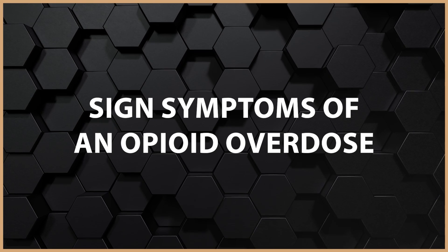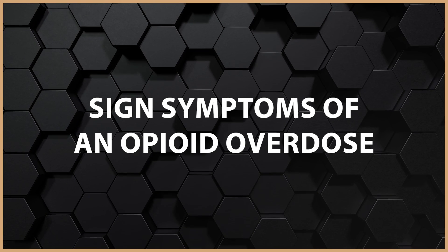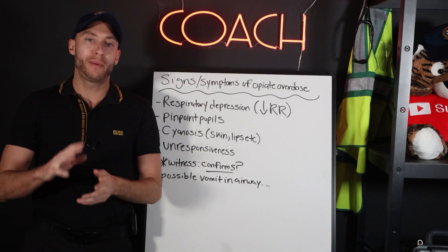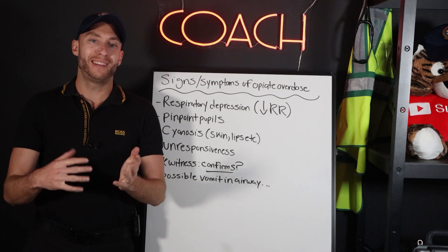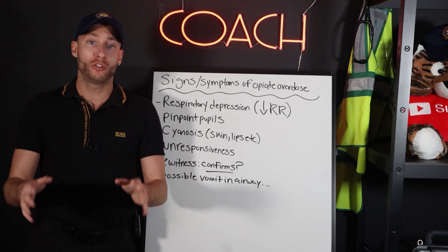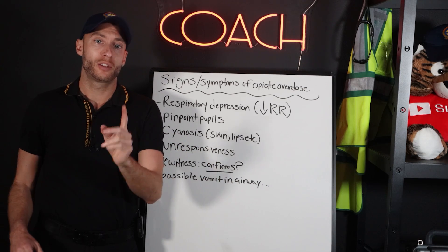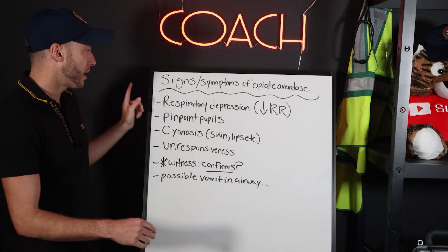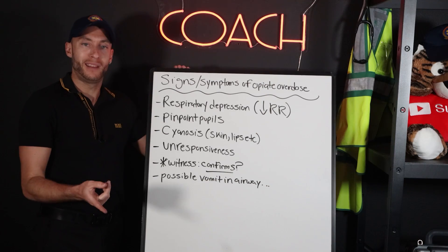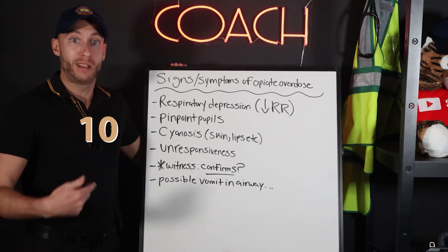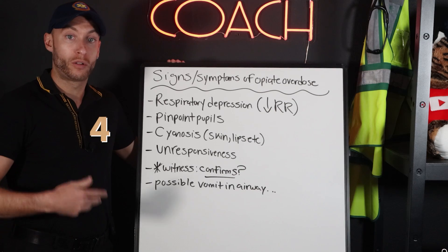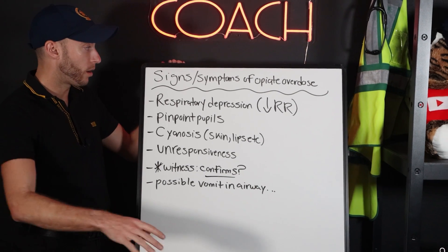Here are the clear-cut signs and symptoms of an opiate overdose to watch for. Respiratory depression for an adult means a respiratory rate under 12 — so 10, 8, 6, 4, 2, or none. When you get to this patient most of the time they're going to be unresponsive and in respiratory arrest. That is your classic case — not breathing at all, apneic.